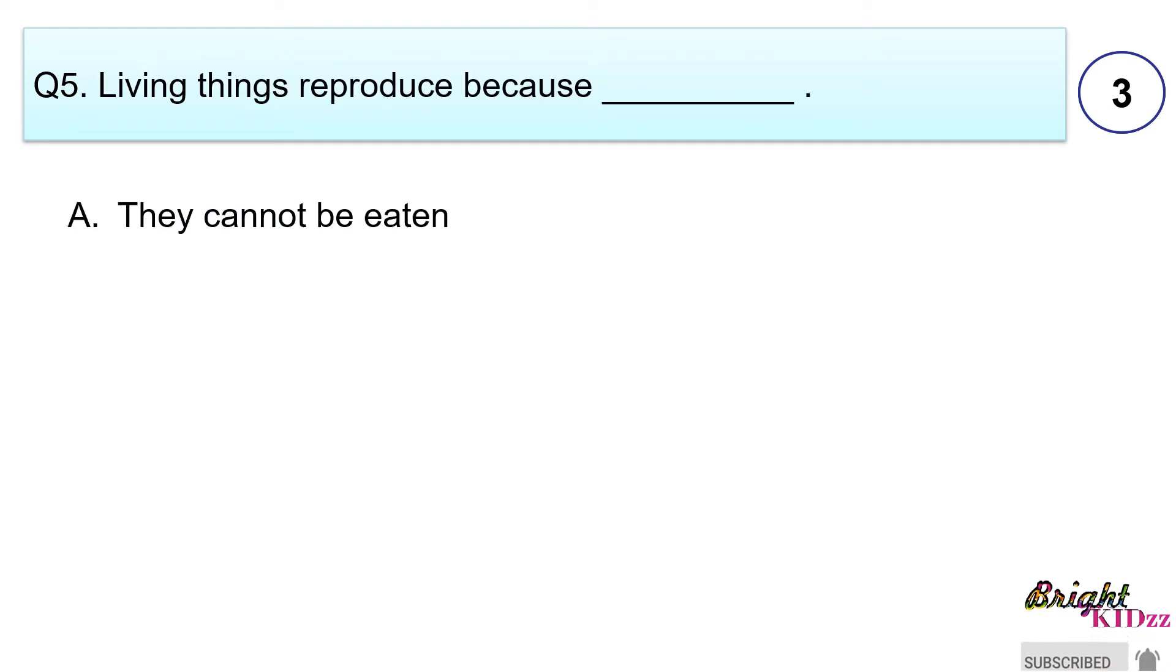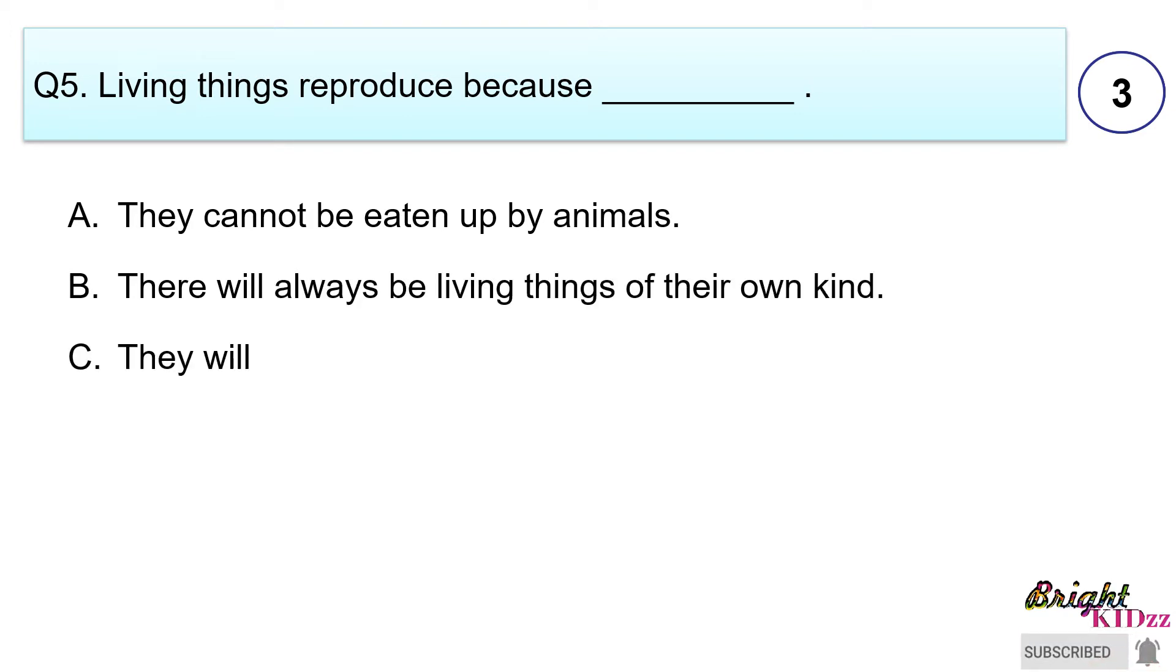Living things can reproduce because: A. They cannot be eaten up by animals. B. There will always be living things of their own kind. C. They will not have to fight for shelter. D. They will not have to fight for food.